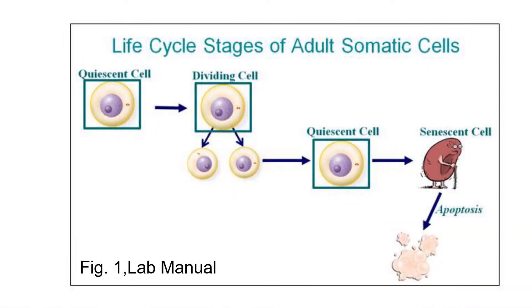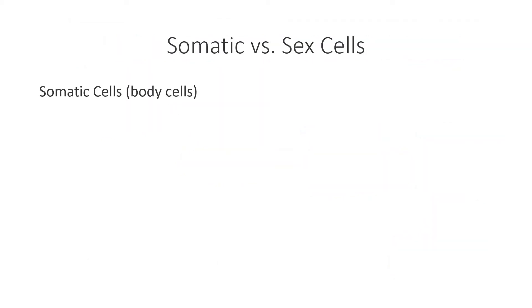Let's take a moment to discuss the life cycle stages of an adult somatic cell. But first, let's make sure we understand what a somatic cell is. The human body has somatic cells and sex cells. Somatic cells are all the cells that make up your body, and for that reason they're often referred to as body cells.